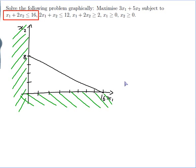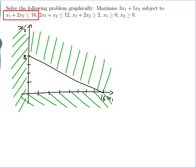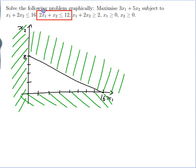So I want the bit below my line, meaning I need to cross out the bit above my line. My set is taking shape. Let's look at the next one: 2x1 plus x2 is less than or equal to 12. Again, if that was an equality, that would be a line, so let me find its intercepts.